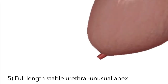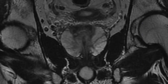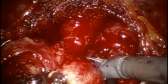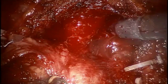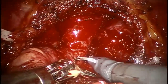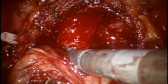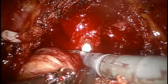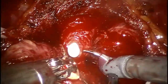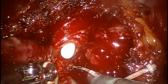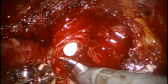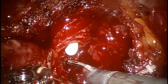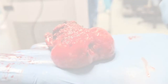The following case illustrates a full-length supported urethral preservation in a patient with a very particular apical anatomy. In order to fully preserve the urethral length, we had to carefully dissect the specific shape of this prostate apex. This case also highlights the importance of image reviewing and surgical planning before a robotic assisted radical prostatectomy.